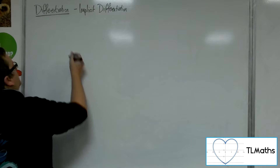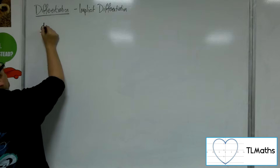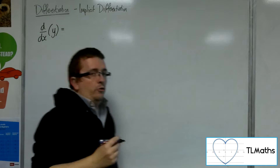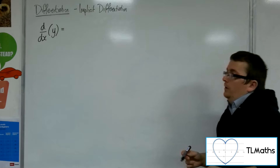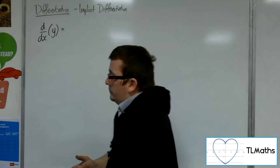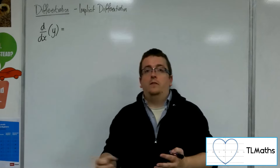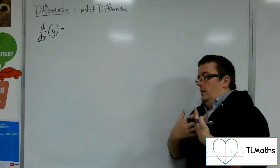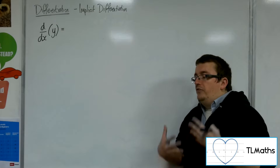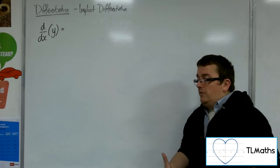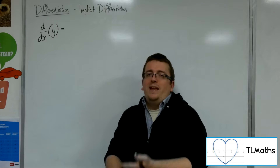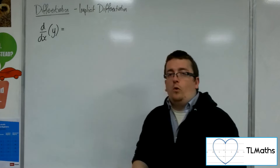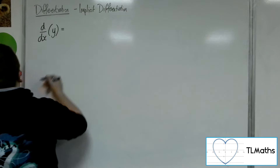What I'm really asking is: what does y differentiate to when we differentiate it with respect to x? Rather than going directly from y equals something to dy/dx equals something, all this time we've effectively been missing out a step in our working that we haven't bothered writing down. Because clearly, if I'm differentiating y with respect to x, I should get dy/dx.